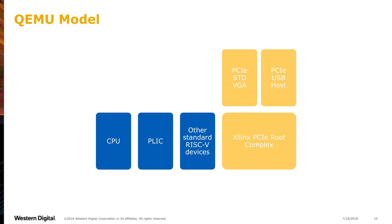The QEMU model has the RISC-V CPU, all the interrupt controllers — such as the local interrupt controller — and other RISC-V hardware being simulated. It also has a Xilinx PCI root complex, which is again simulated. On top of that, it enables the standard display with VGA and the USB host.